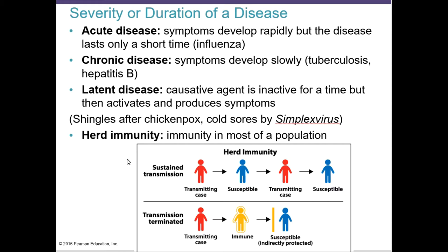A latent disease is caused by an agent that is inactive in the body for a time, but then activates and produces symptoms. For example, if you had chicken pox in the past, one day you may develop shingles. Cold sores from herpes simplex virus lodge in nerve endings and stay there until reactivation. Those are all latent diseases.